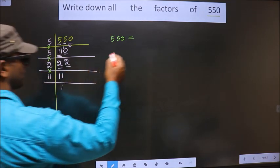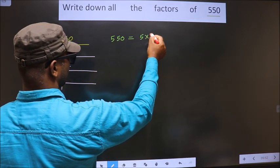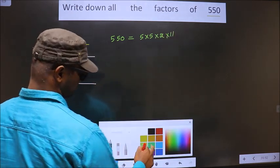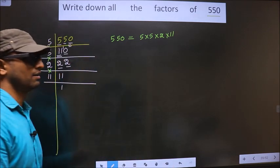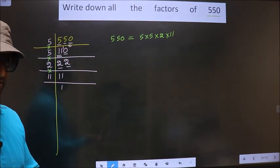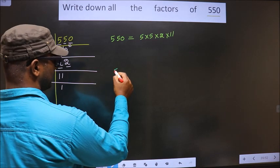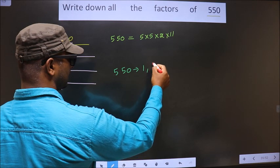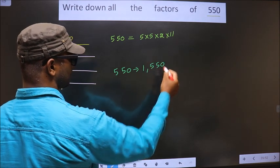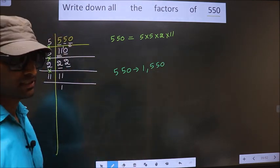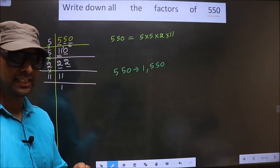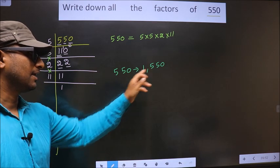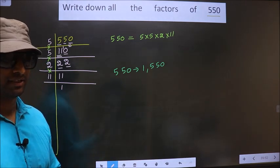So now 550 is equal to the product of these numbers, that is 5 into 5 into 2 into 11. Next, any number you take will definitely include 1 and the number itself in its factors.